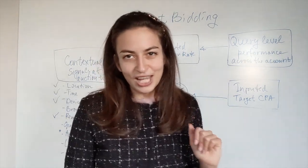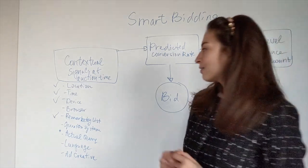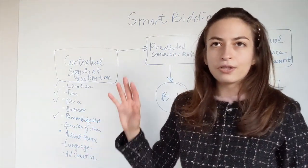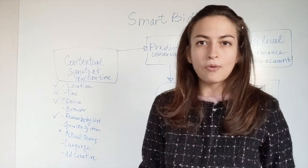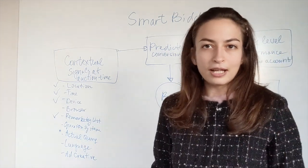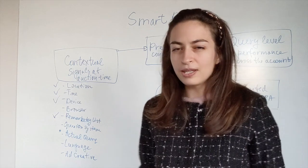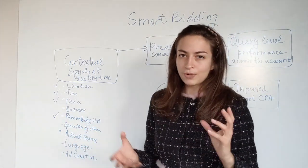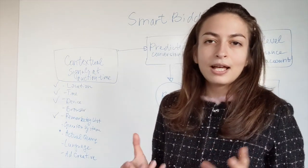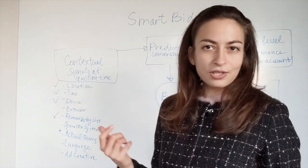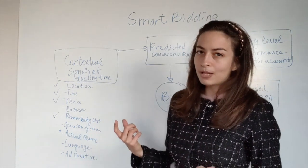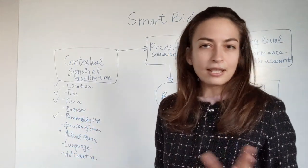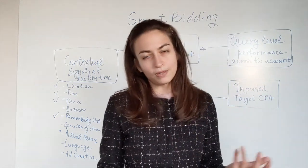Then browser: whether these users are on Google Chrome, Mozilla, Internet Explorer, whoever is using that now. All these can be taken into consideration when setting up the bid. At the moment advertisers don't have access to this information. This can only be done with smart bidding from Google.